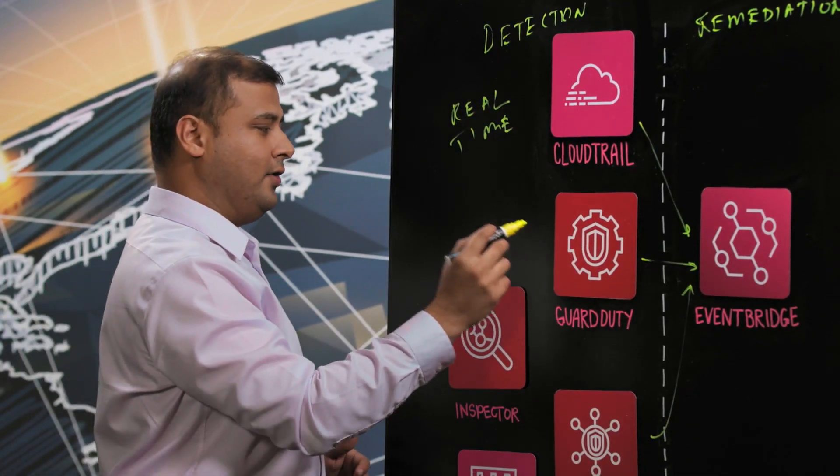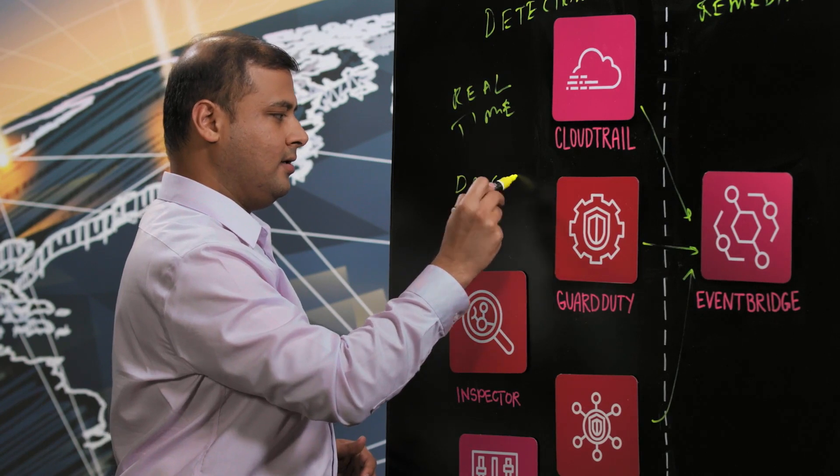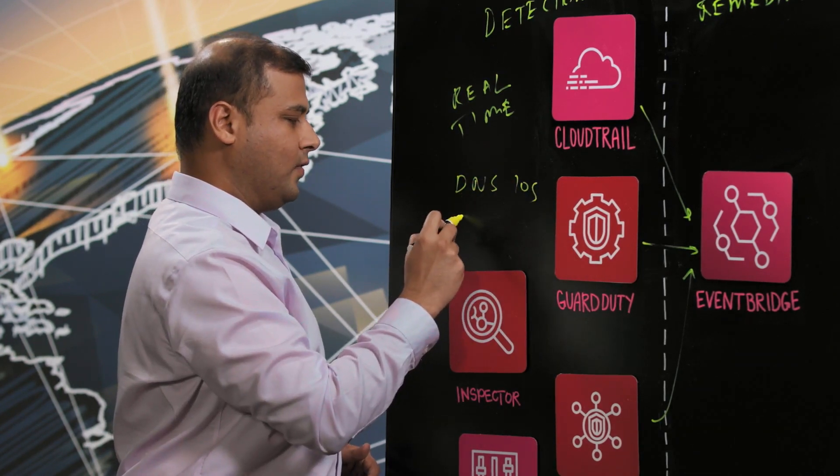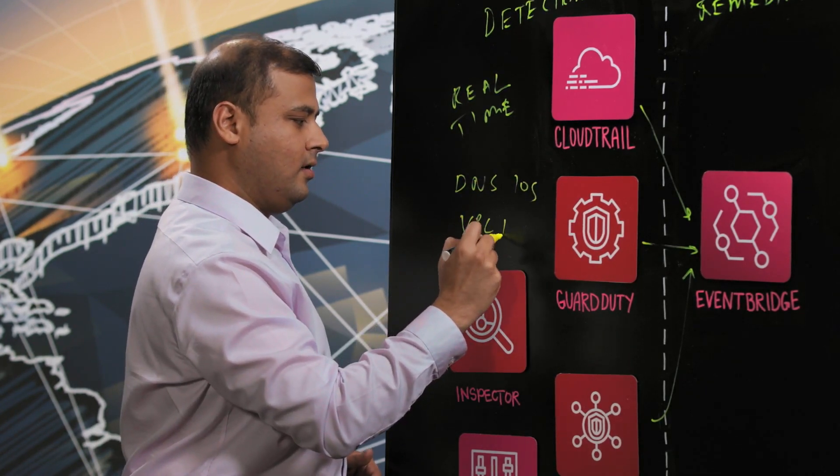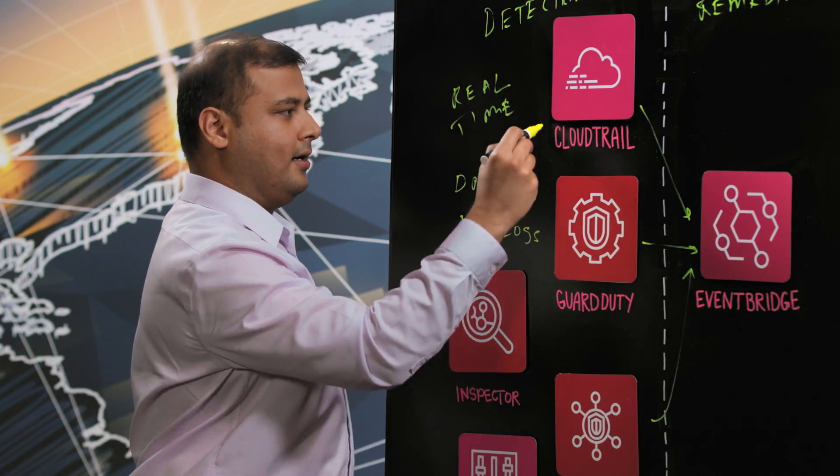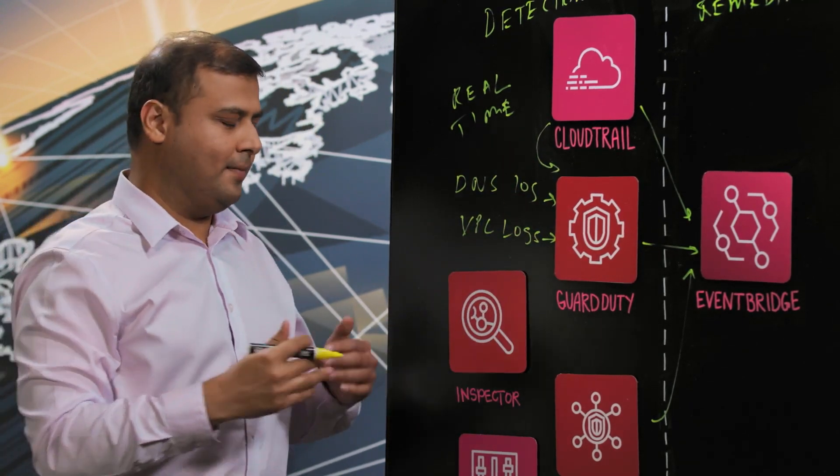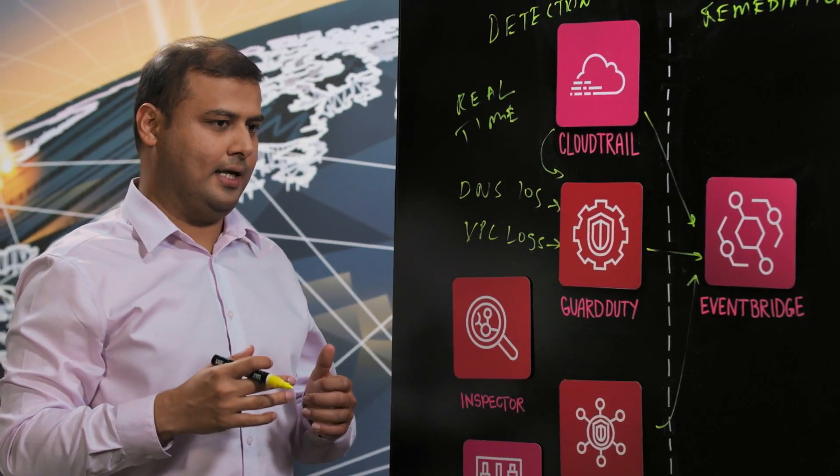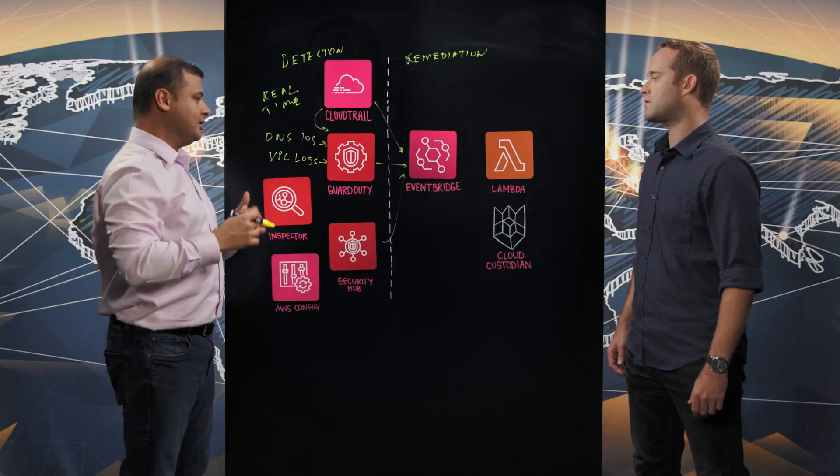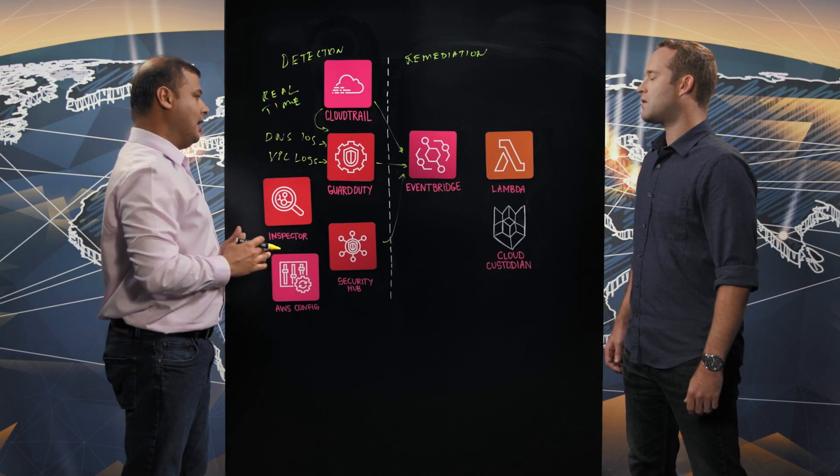We have GuardDuty, which ingests DNS logs, VPC flow logs, and CloudTrail logs. And the machine learning model identifies if there's any anomalies and triggers an event if it detects one through EventBridge.